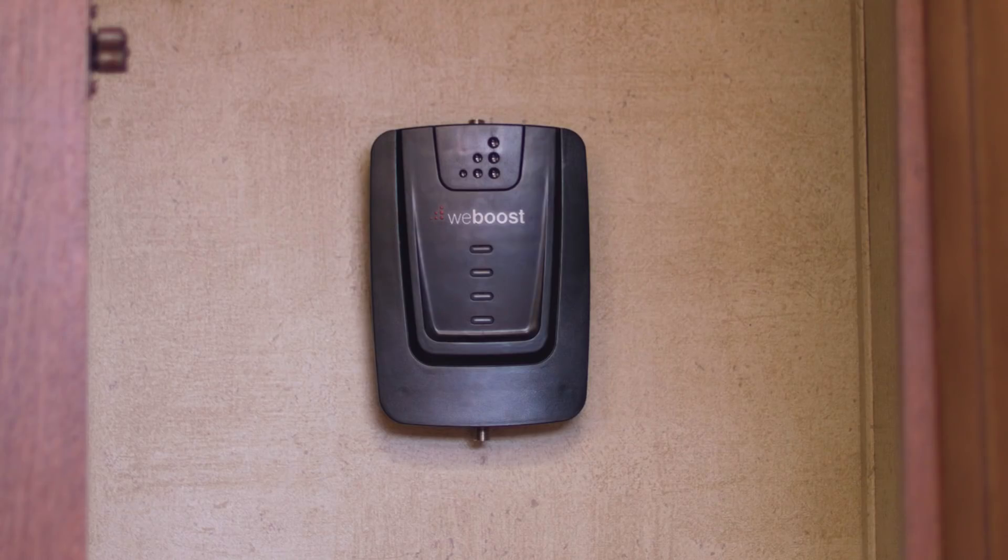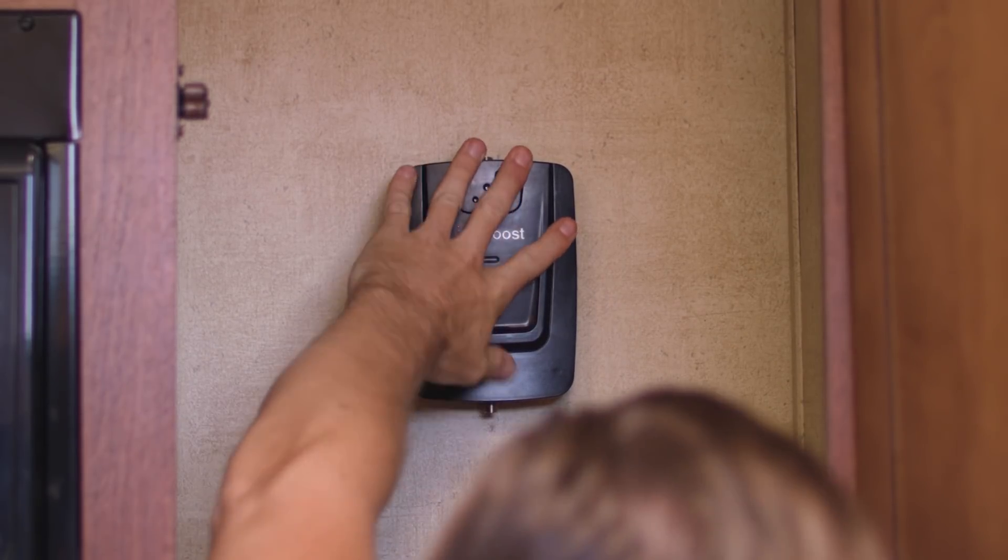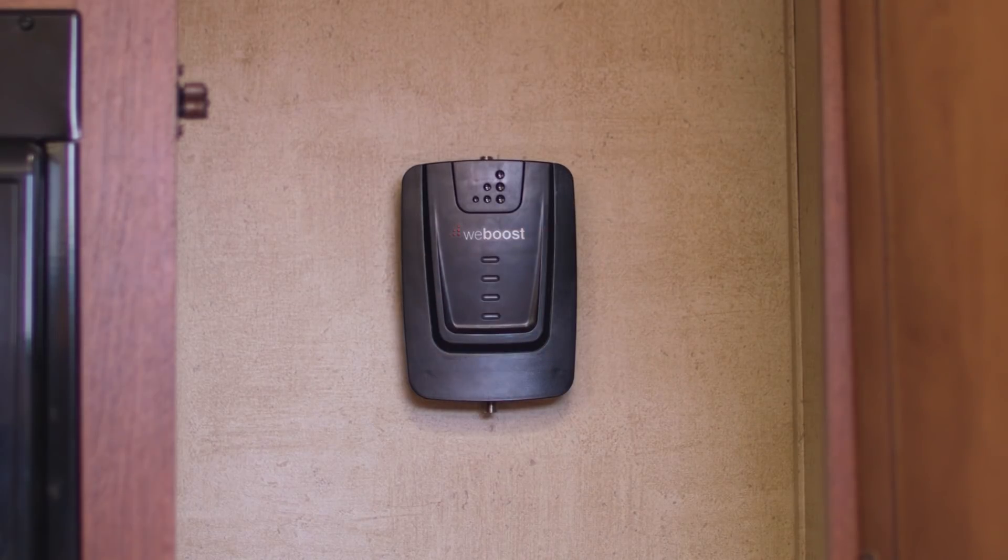Step 3. Choose a location for your booster. Decide on a place to put the booster inside the RV. We suggest placing the booster in a cabinet with proper ventilation near your power supply source. Just make sure the 30 foot cable can reach it.